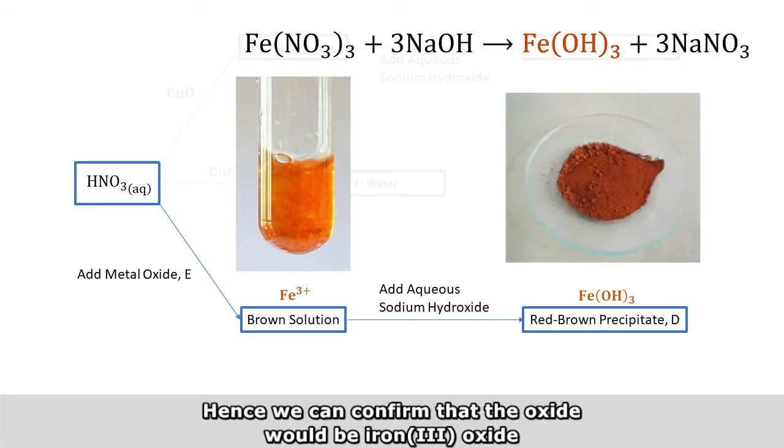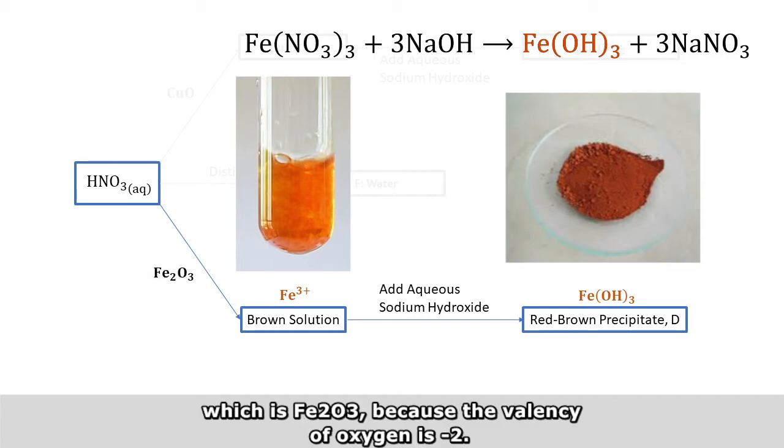Hence, we can confirm that oxide will be iron 3 oxide, which is Fe2O3, because the valency of oxygen is minus 2.